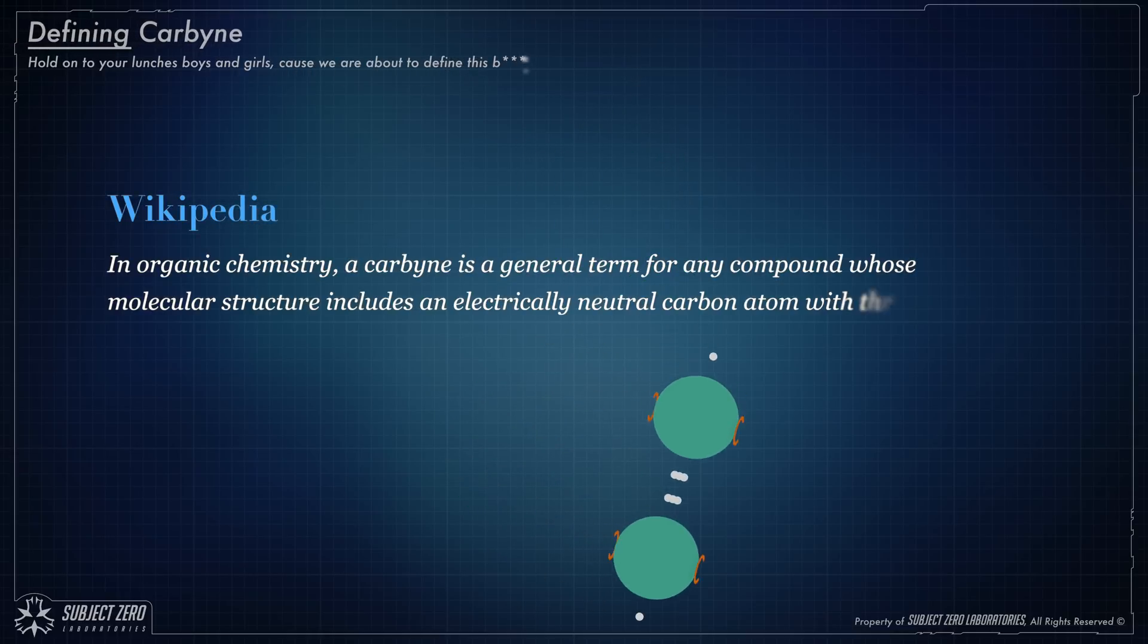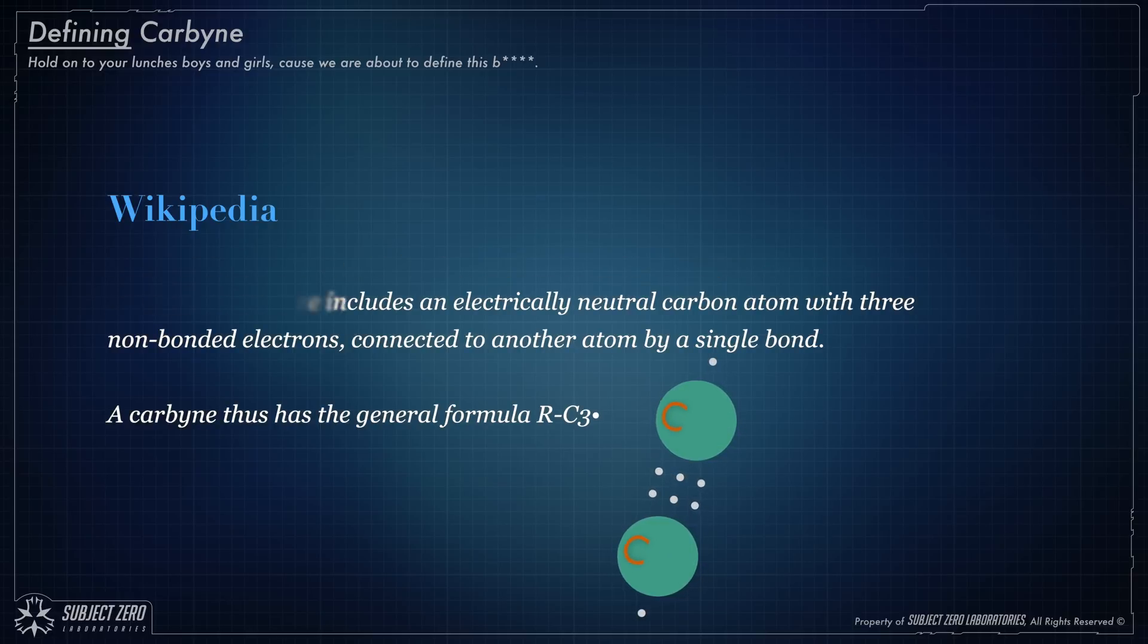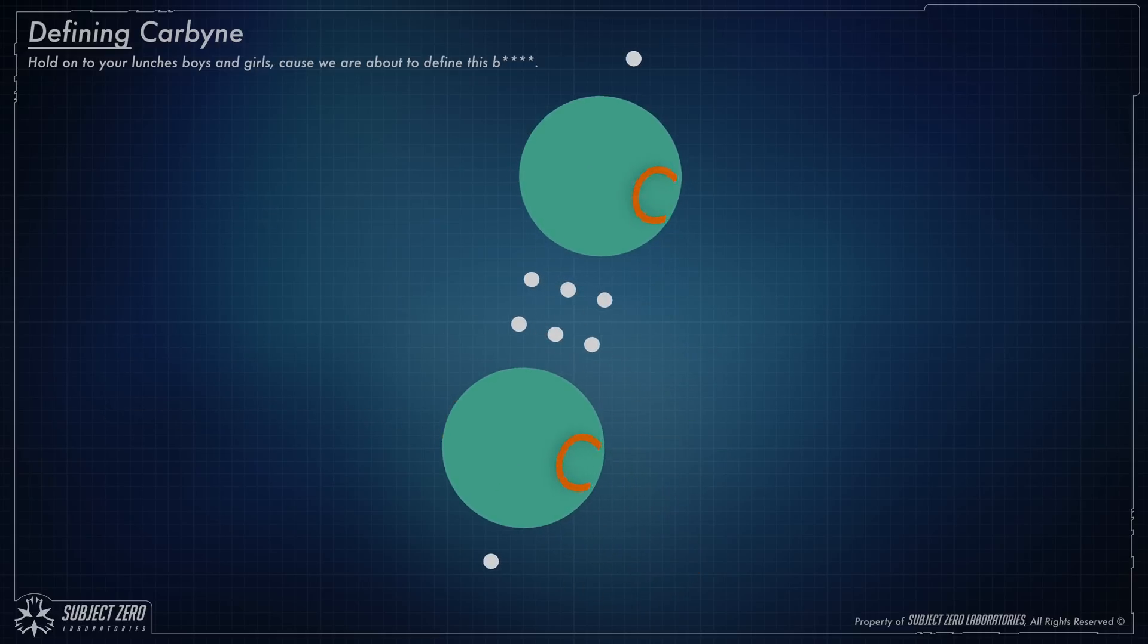In organic chemistry, a carbine is a general term for any compound whose molecular structure includes an electrically neutral carbon atom with three non-bonded electrons connected to another atom by a single bond. A carbine thus has the general formula RC3.